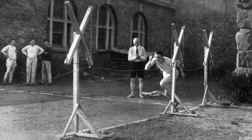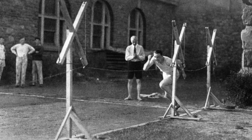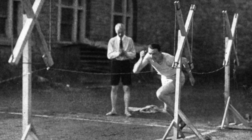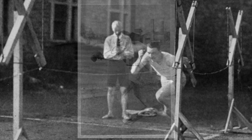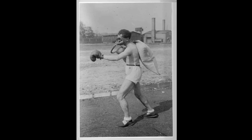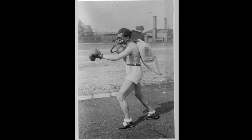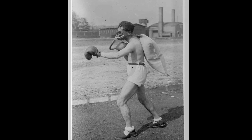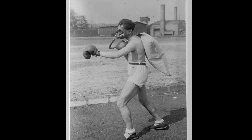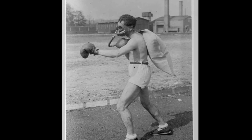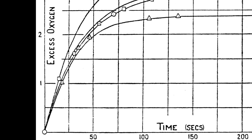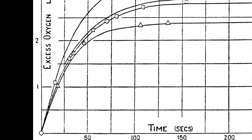Hill's development of VO2 max started at Manchester University, when he and his researchers strapped Douglas bags — rubber lined cloth bags that could hold 50 to 100 liters of air — on their backs and collected expired air samples while running. They were able to study the time course of the increase in oxygen intake at various running speeds.